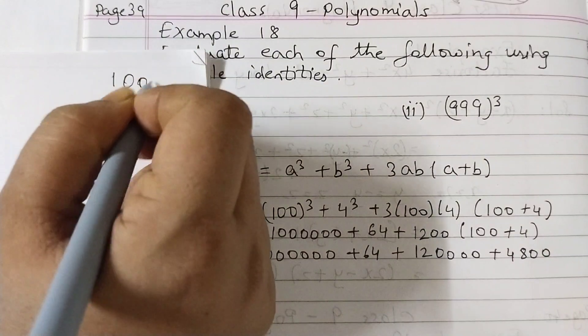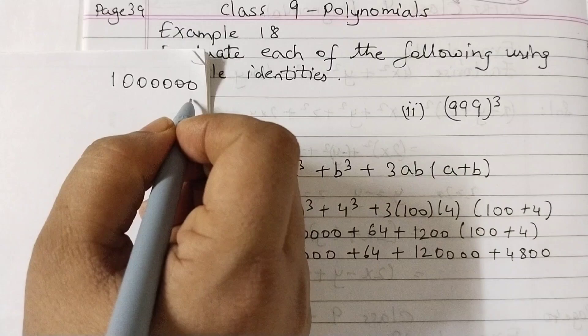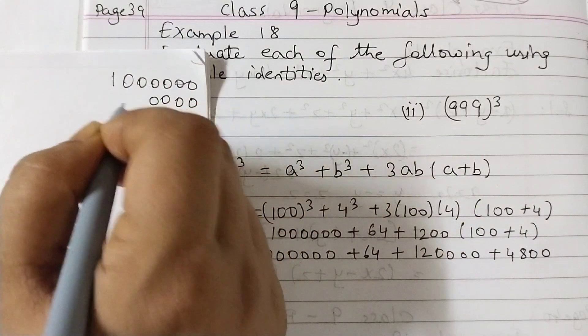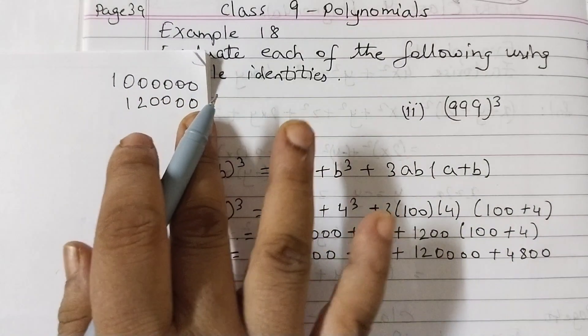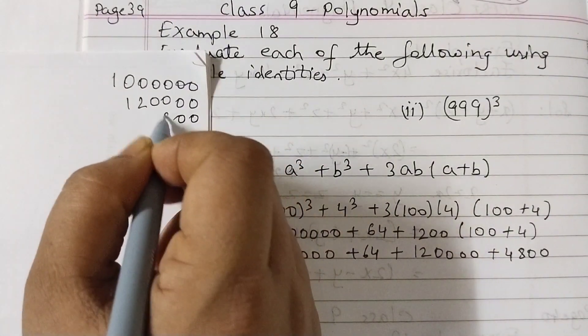Now we are going to add all these four terms. So we got one, two, three, four, five, six, then we have one, two, three, four. So this is one, two, three, four, one, two.